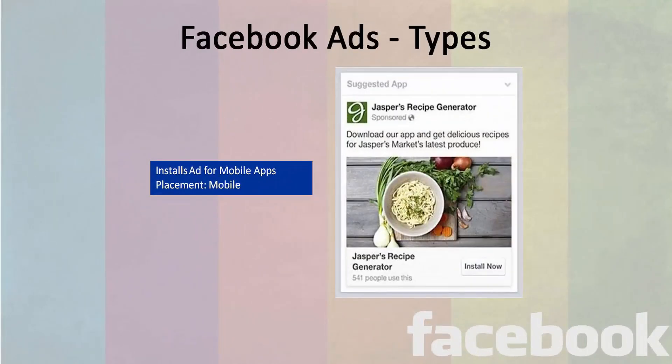One of the objectives to run Facebook ads is to get installs for mobile apps by the brand. The install ads for mobile apps get placement only in the mobile version of Facebook, which lets you install the app as soon as you click on the ad.